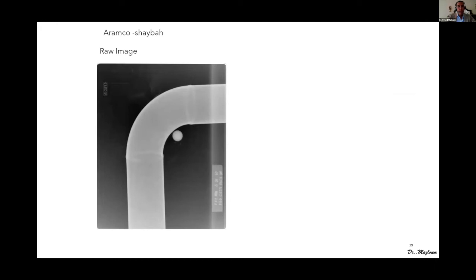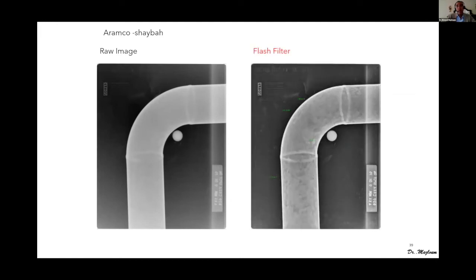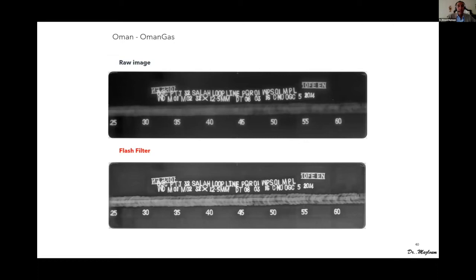In Egypt, for example, comparing the raw image with the flash filter version — with one click on the flash filter icon it gives you a much better screen immediately. In Oman, you can see the difference between the enhanced flash filter screen on the bottom versus the raw images.